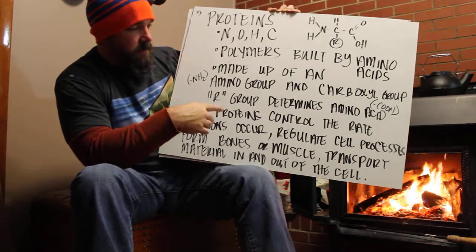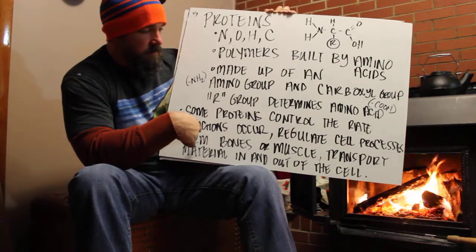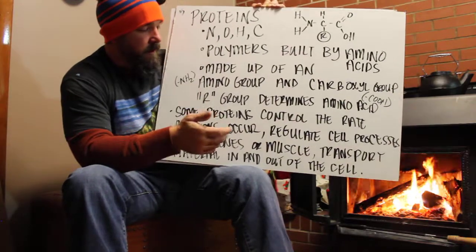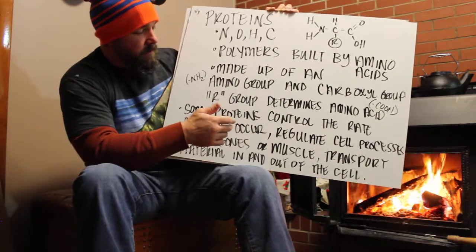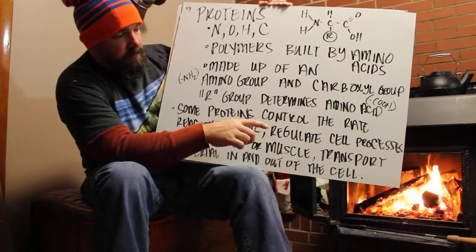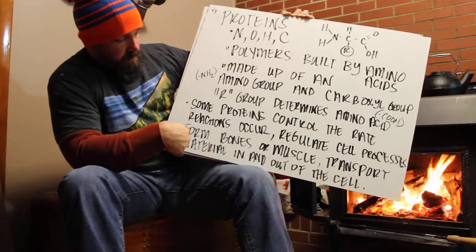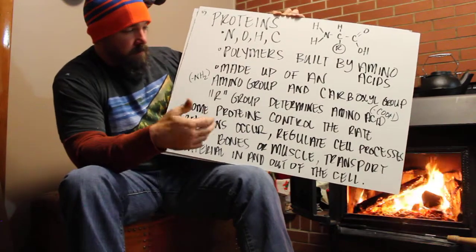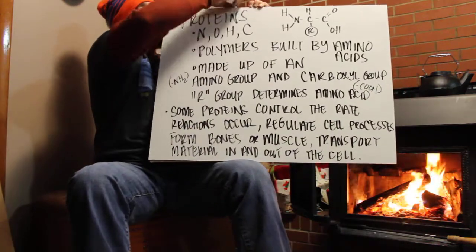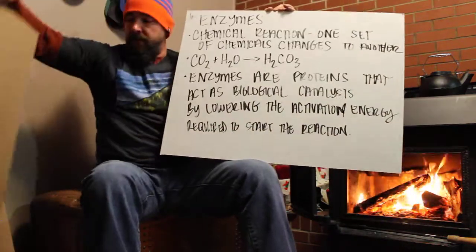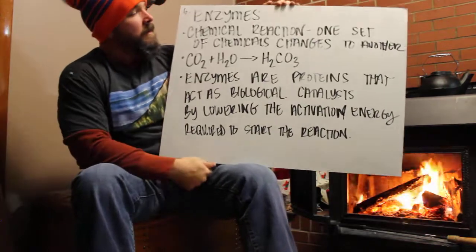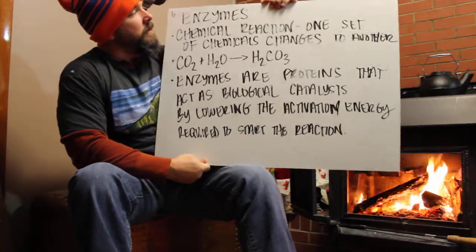Some proteins control the rate of reactions in the cell — chemical reactions have to happen, and these control the rate at which they happen. They regulate cell processes. They form bones and muscles, and they transport material into and out of the cell. There are protein doorways for when food or waste is too big to get in or out — they have to have the protein doorway to get through.